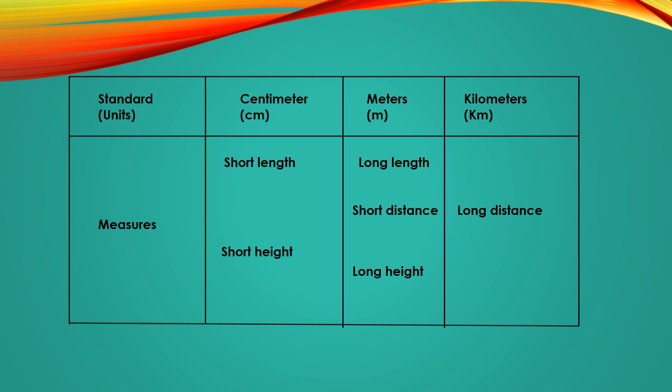Centimeter can be written as cm. It is used to measure short length and short height objects — like a table and chair. The next standard unit is meter, written as m in small letters. We use meter to measure long length, like the length of a room, and short distances, like the distance between a kitchen and a bedroom. We also use it to measure long heights of objects.